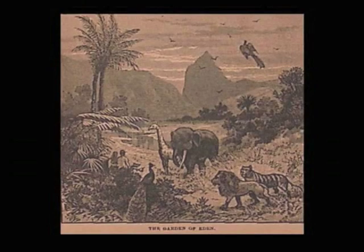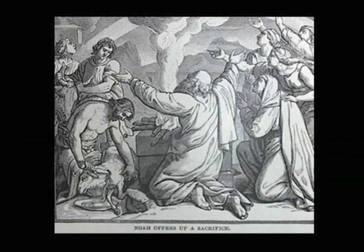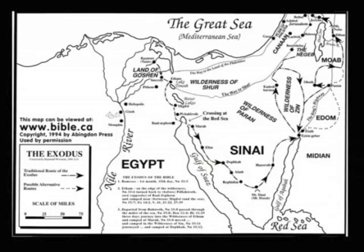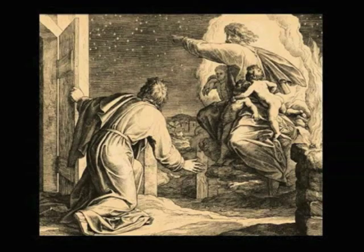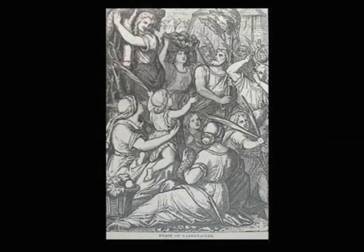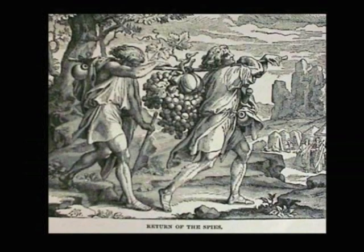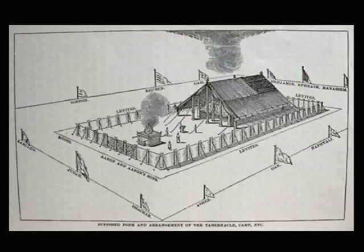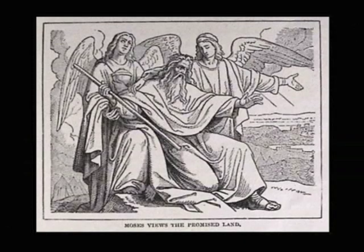The Torah includes the creation of the earth and the first humans, the great flood and the covenant with the Gentiles, the enslavement of the Hebrews in Egypt, the Exodus, the giving of the Torah, the renewal of the covenant given to Abraham, the establishment of the festivals, the 40 years of wandering through the desert, the tabernacle, ark, and priestly duties, and the death of Moses.